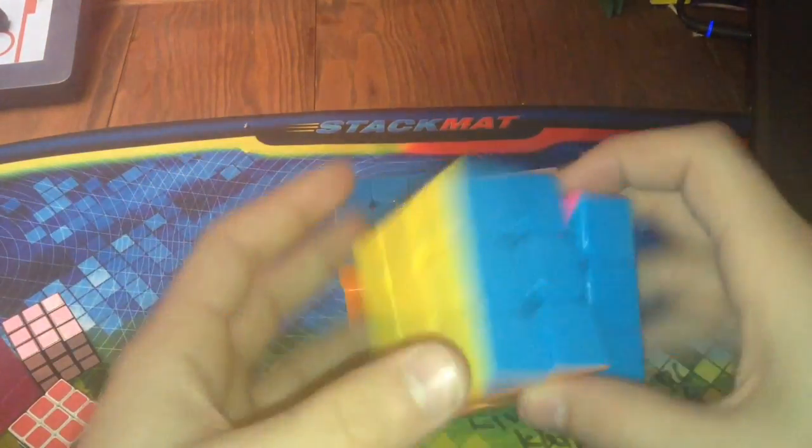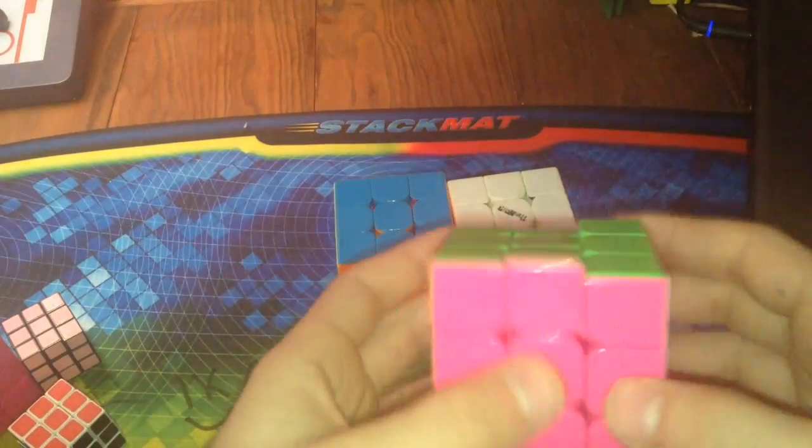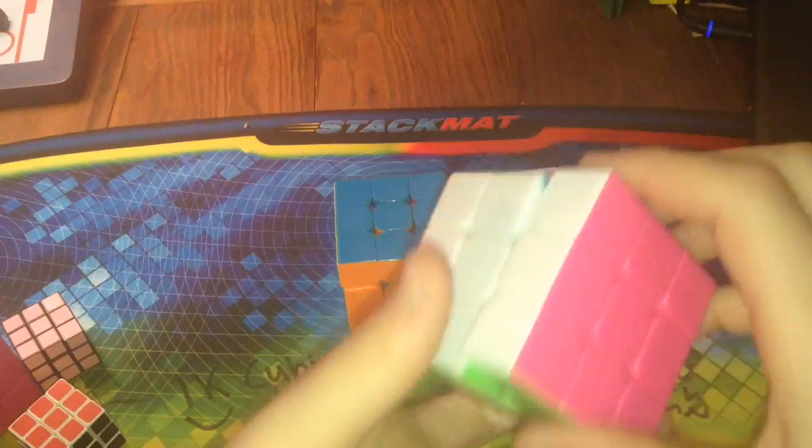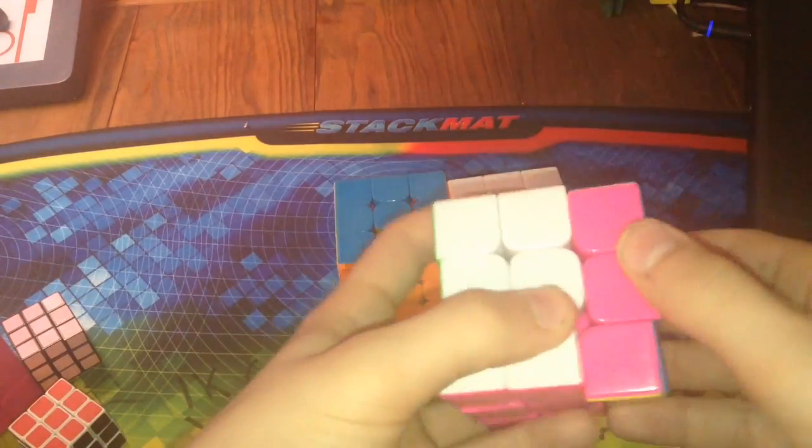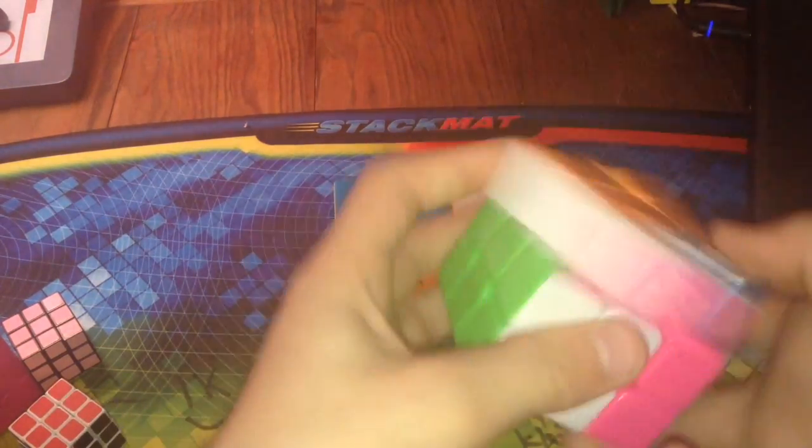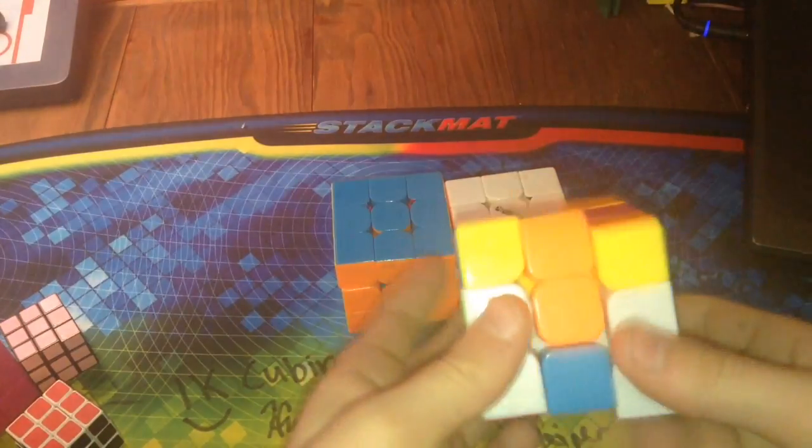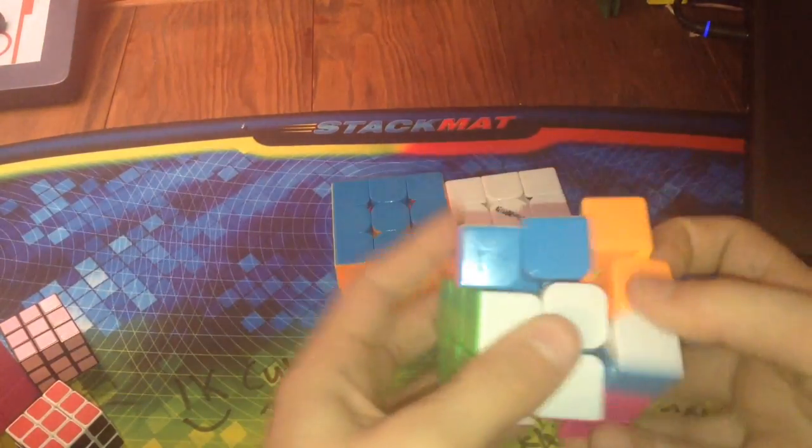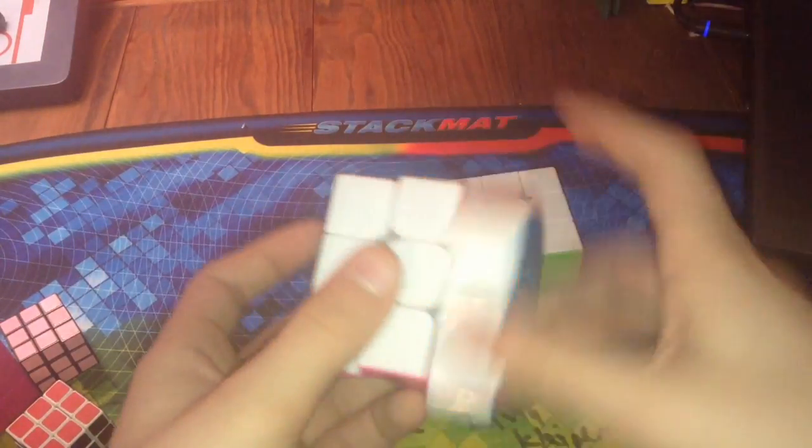Next, we have a YJ Guanlong with magnets on some sides. Very, very strong magnets. The magnets are in half the cube. And I plan on putting more magnets in. But for now, I just have like half the cube with magnets.